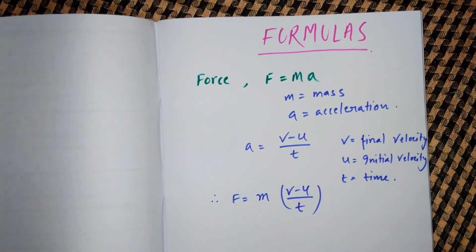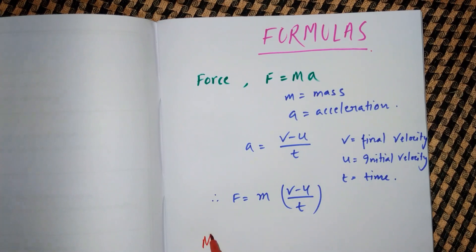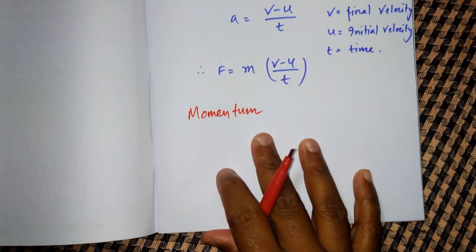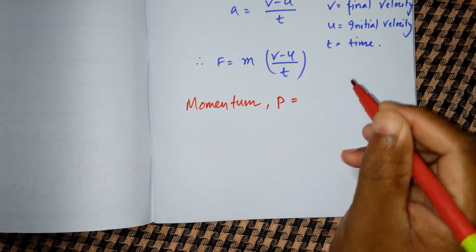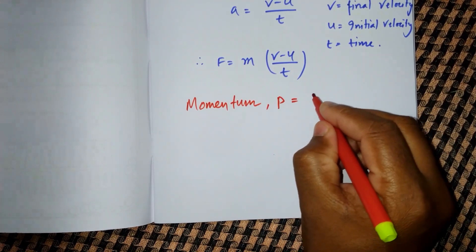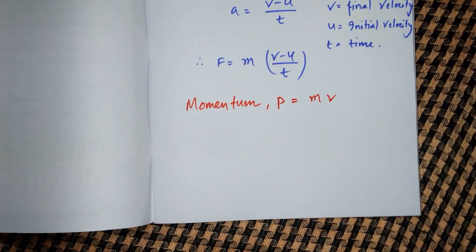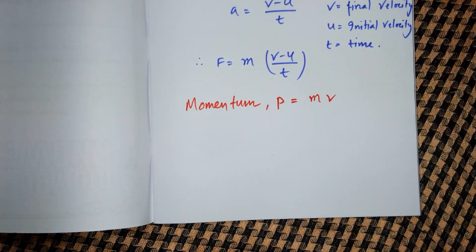The next concept is momentum. Momentum is represented by p. So p equals m times v, where m is mass and v is velocity.